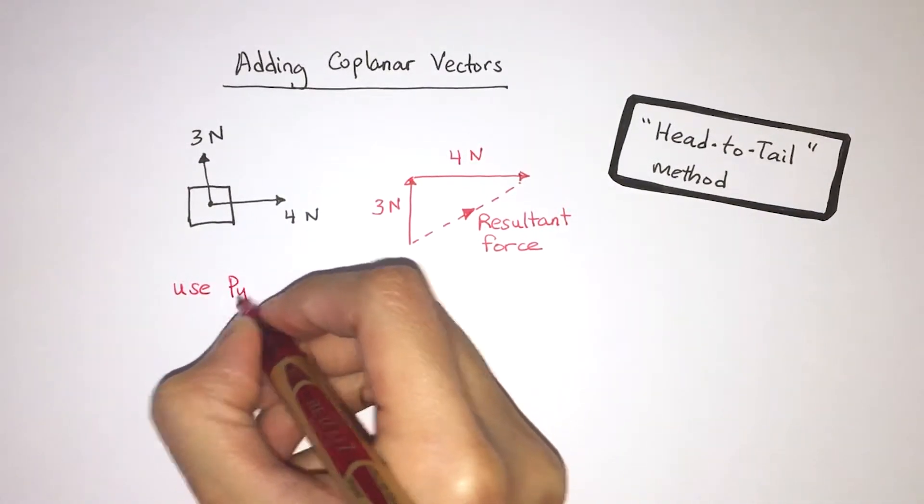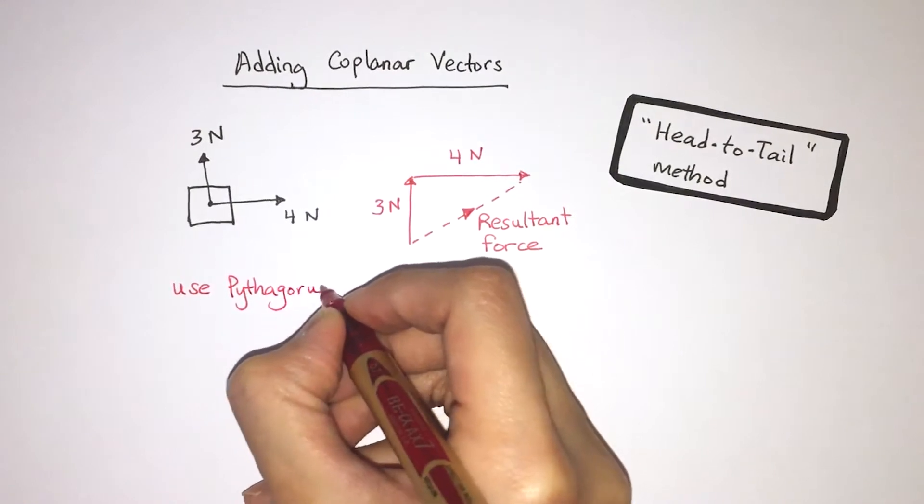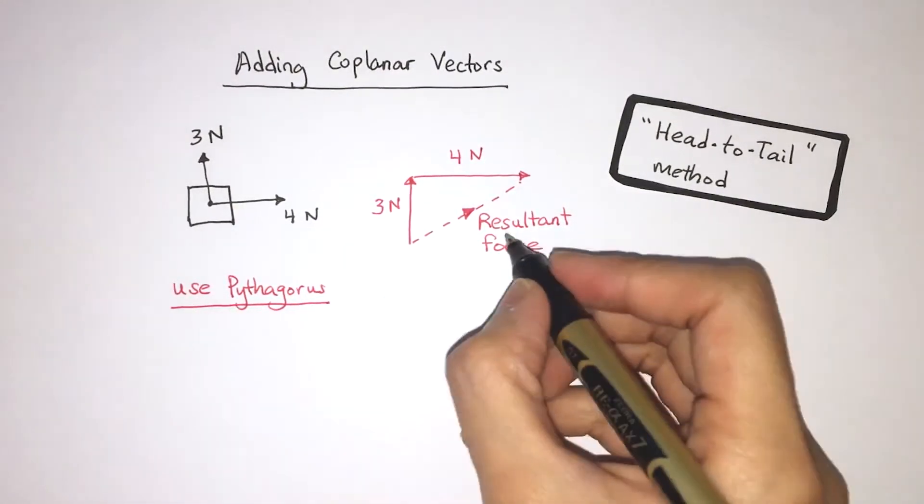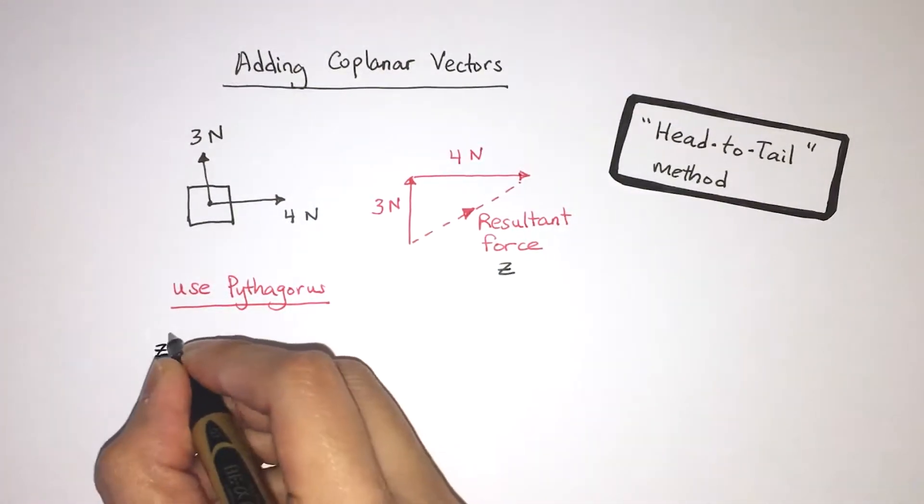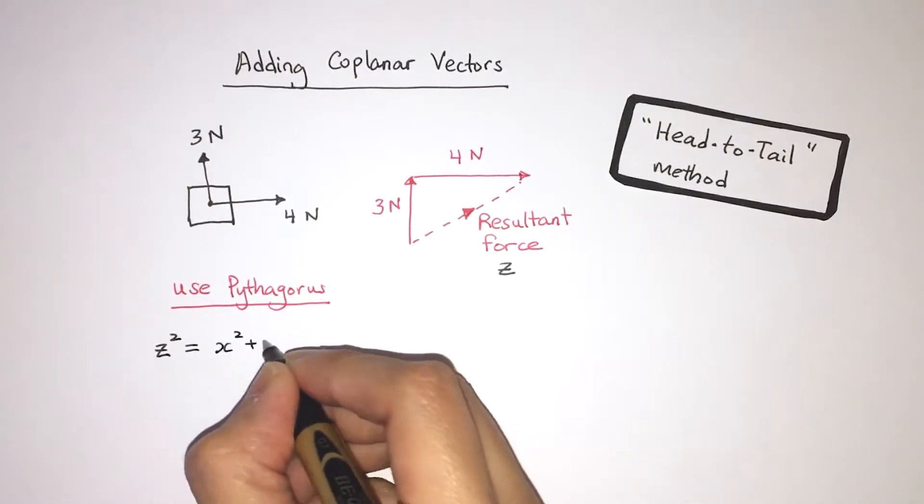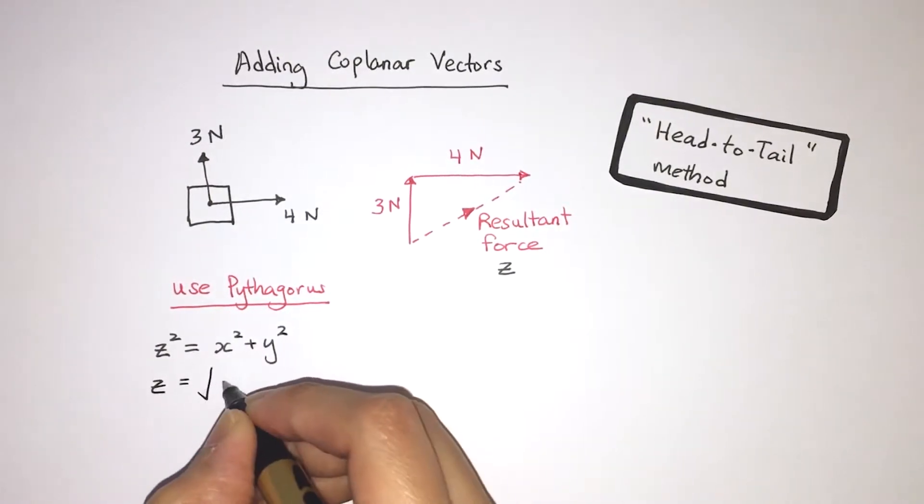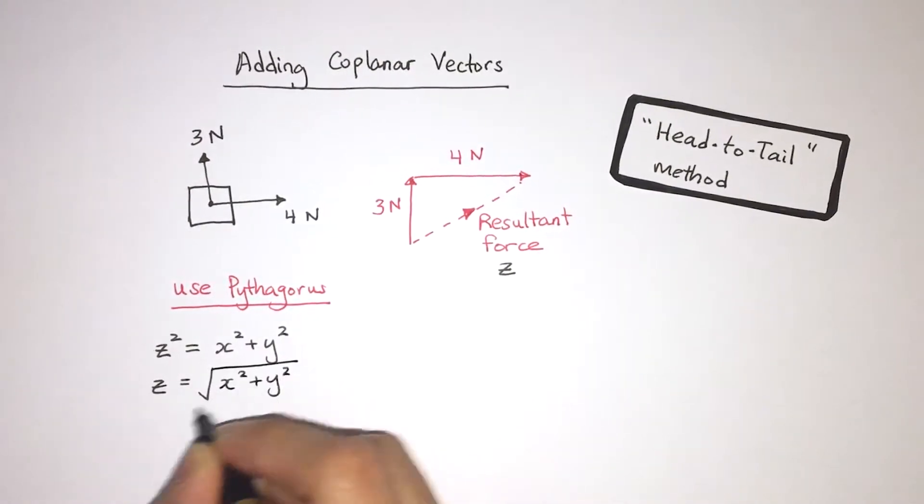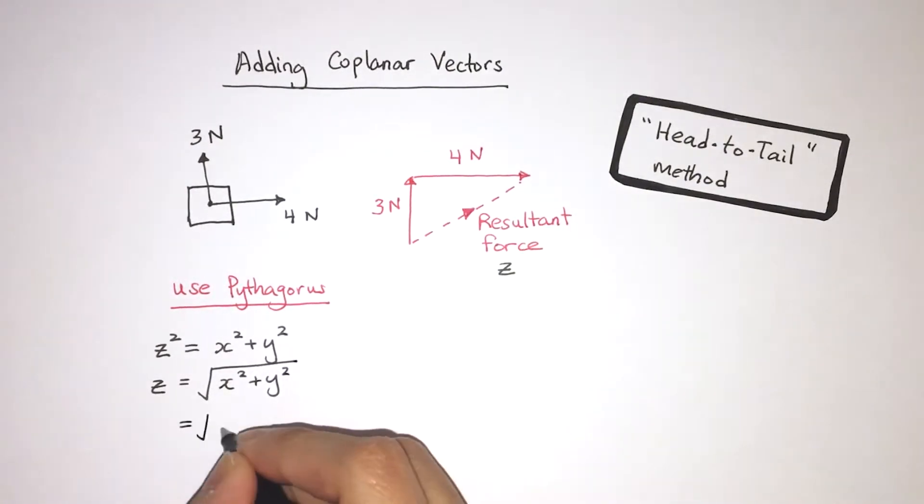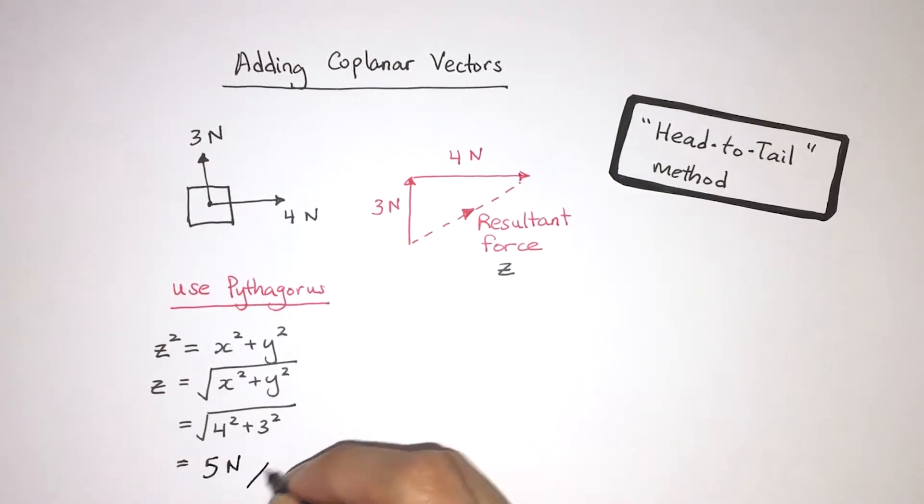Then I'm going to simply use Pythagoras. Pythagoras theorem says that z squared is equal to x squared plus y squared. So I'm just going to square root all of those to get z. And that's square root of 4 squared plus 3 squared. And that gives me 5 newtons. 5 newtons is the resultant force.